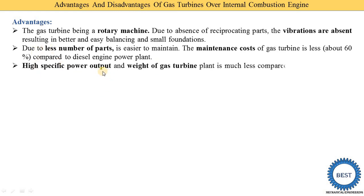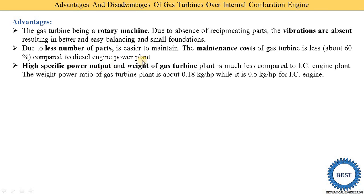Third, the gas turbine has a high specific power output — greater than the IC engine — and its weight is much less for the same power output. The weight-to-power ratio of a gas turbine plant is about 0.18 kg per HP, while it is 0.5 kg per HP for an IC engine. So for 1 HP of output, the IC engine weighs 0.5 kg versus only 0.18 kg for the gas turbine.